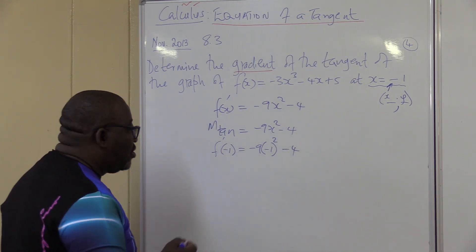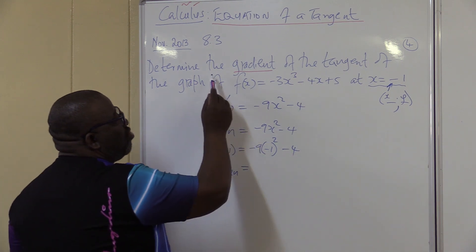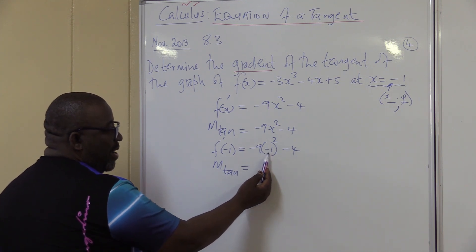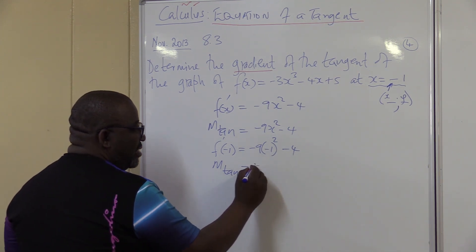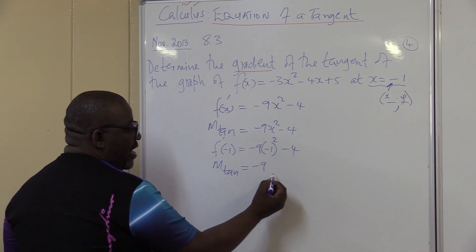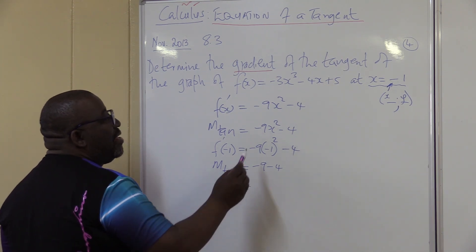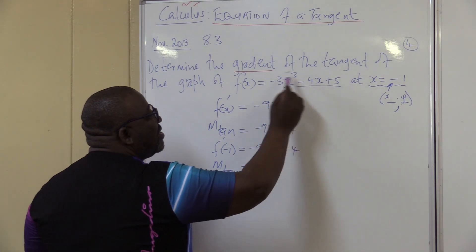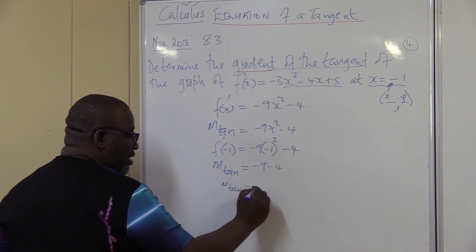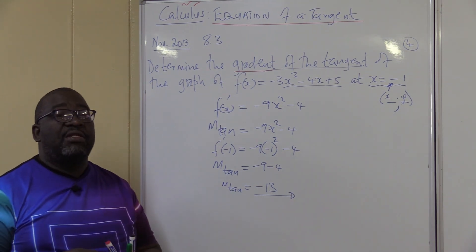So it's minus 9 times minus 1 squared minus 4. This is the gradient of the tangent — m_tan equals the gradient of the tangent. What is this? Minus 1 squared is 1, times minus 9 it is minus 9, because positive times negative is negative. Then minus 4. Therefore my gradient of the tangent — because it is the same — the gradient of this line is the same as the gradient of the tangent at this particular point. It is minus 13. This is the gradient of the tangent. That's how you calculate the gradient of the tangent.